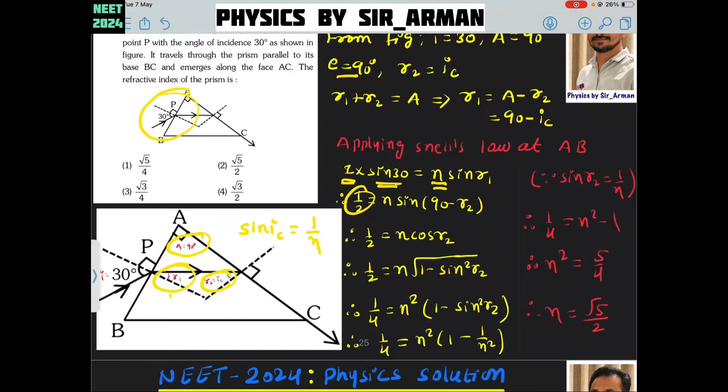What is r1? Sine r1 is this angle right here. r1 is nothing but 90 minus ic. 90 minus ic or 90 minus r2, any of the two you can put. 1 by 2 equals n sine of 90 minus ic. Sine of 90 minus theta is cos theta.